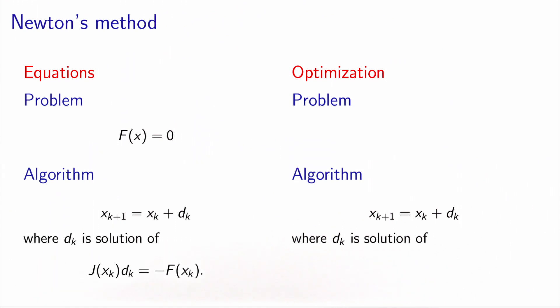How do we use this algorithm in the context of optimization? Well, in our case, the problem we want to solve is the gradient of f equals zero. The structure of the algorithm will be the same, so it's an iterative algorithm that updates xk using dk. And now the way to calculate dk is by solving, again, a linear system of equations. But now the Jacobian of f is actually the derivative of the gradient, which is the second derivative matrix of the objective function.